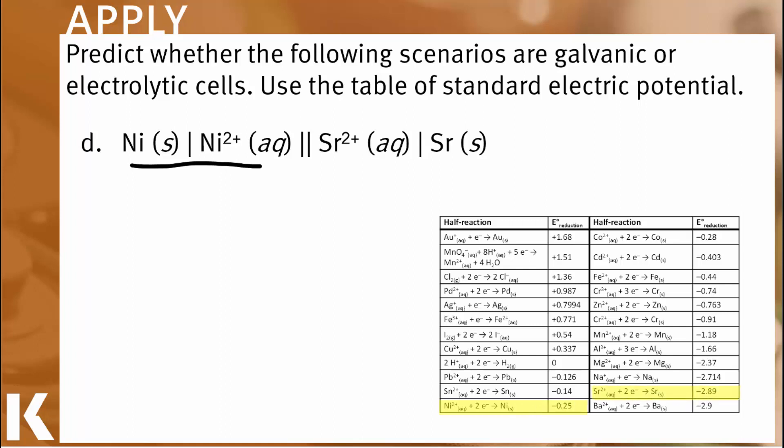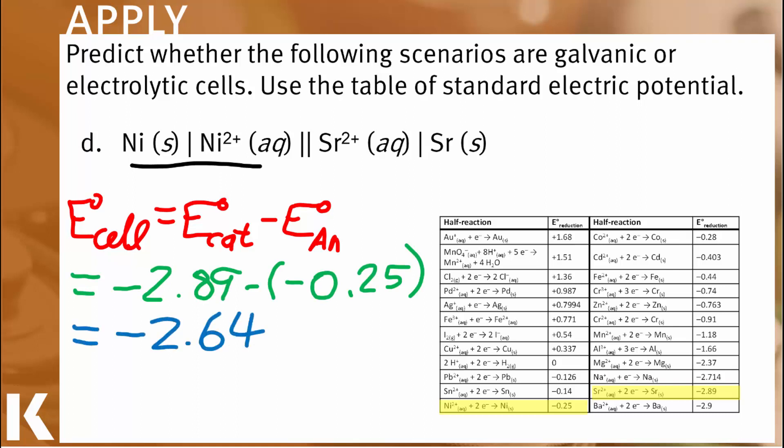And we see that the nickel half reaction has a reduction potential of minus 0.25, while the strontium half reaction has a reduction potential of minus 2.89 volts. So putting that into our E-cell calculation, we find that the overall cell potential is negative 2.64 volts. And of course, the kind of cell that has a negative cell potential is an electrolytic cell.